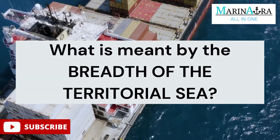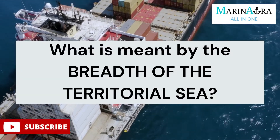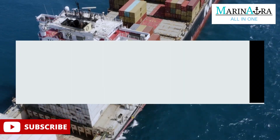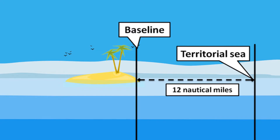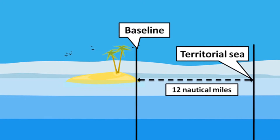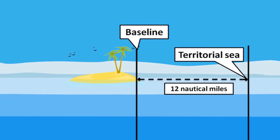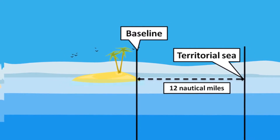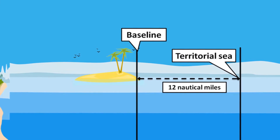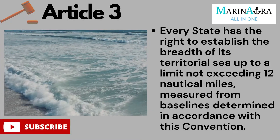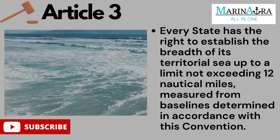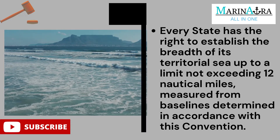First, what is meant by the breadth of the territorial sea? Article 3 of the United Nations Convention on the Law of Sea states that every state has the right to establish the breadth of its territorial sea up to a limit not exceeding 12 nautical miles, measured from baselines determined in accordance with this convention.